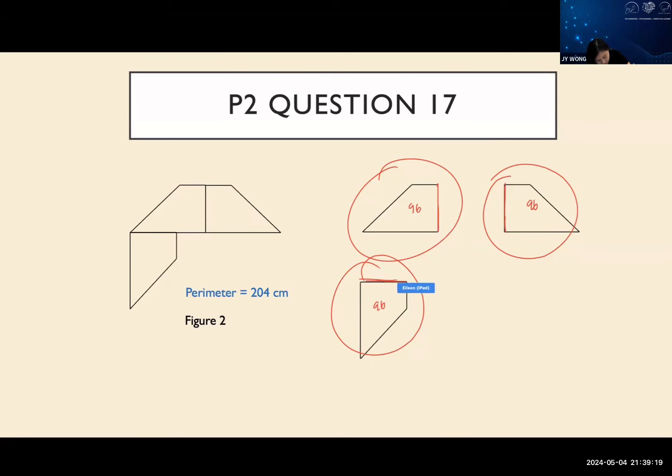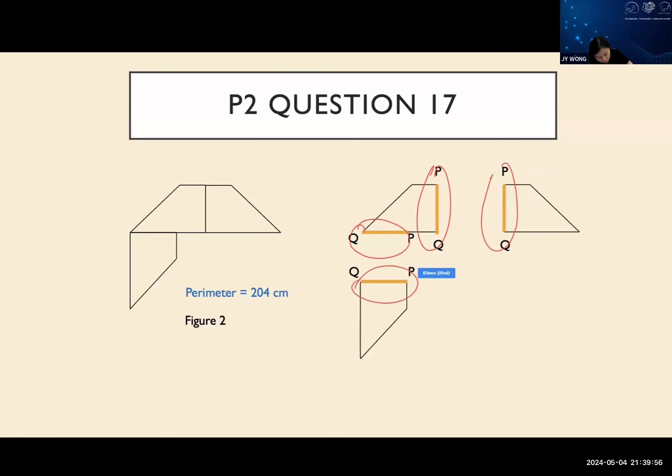Correct, each of this is 96. When you split them up, it counts in all the parts here. This part is no longer joined, so you're counting them because you're counting individual trapeziums. This will be your PQ, this is also your PQ, this is also your PQ, and this is also your PQ. So you notice the difference between Figure 2 and what I did magically to split up all the trapeziums. These are the extra sides that have been added to the perimeter because you split them. Now they are exposed, so we are adding them into the perimeter.